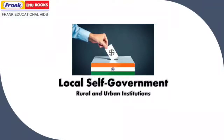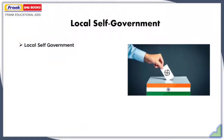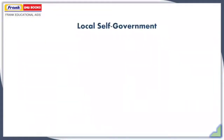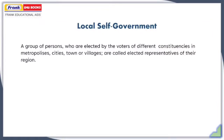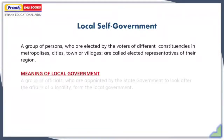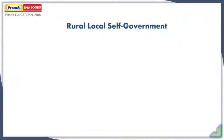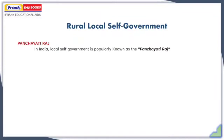In this video, we are going to learn about local self-government — rural and urban institutions. We will cover rural local self-government: Gram Panchayat, Panchayat Samiti, and Zilla Parishad, and then urban local self-government: Municipal Corporation and Municipal Committees. Local self-government refers to a group of elected representatives chosen by voters of different constituencies in metropolises, cities, towns, or villages. In India, rural local self-government is also known as Panchayati Raj.